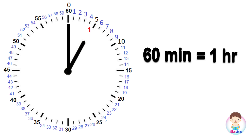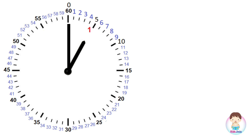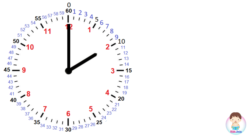If 2 hours are completed, then the hour hand advances to the 10th mark — number 2 is written at the 10th mark — and so on until 12 hours. Numbers 1, 2, 3 through 12 are written at every 5-mark interval. You will understand this easily when we learn about time reading in the analog clock section.